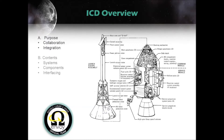An ICD contains all the technical information about every system and subsystem that make up a product. This includes schematics, drawings, figures, and tables explaining how the systems will be assembled and how they will interface with one another. This includes all inputs and outputs of each system, such as power and data transfer. Schematics and figures describing all the connection interfaces are also provided.